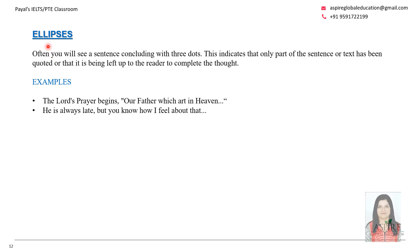Now let's look at how ellipses are used. When a sentence concludes with three dots, it indicates that only part of the sentence or text has been quoted and it is left up to the reader to complete the thought. For example: 'He's always late, but you know how I feel about that...' — leaving it incomplete so the reader understands your feelings. This is mainly an informal way of writing and does not work in formal or semi-formal writing.